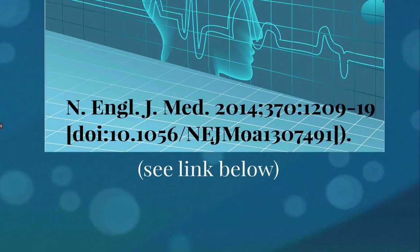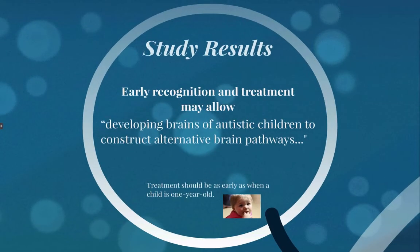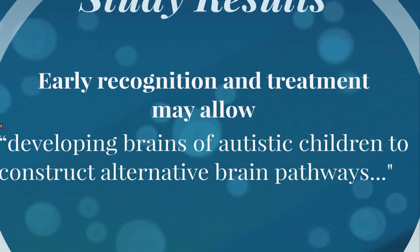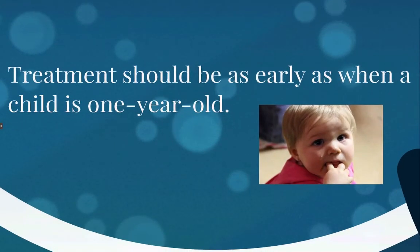The research points to early prenatal development and the brain. The study results suggest that early recognition and treatment of autism may allow the developing brains of autistic children to construct alternative brain pathways around the patchy defects in the cortex. The authors of this research suggest treatment should begin as early as when a child is one year old. The result could be improved social functioning and communication.